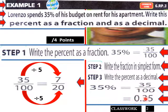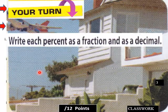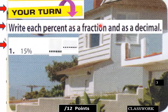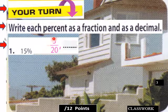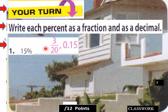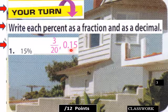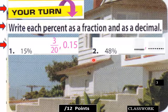Write each percent as a fraction and as a decimal. So, 15 percent would be 3 over 20. 15 percent, 0.15 would be 15 over 100 which reduces to 3 over 20.